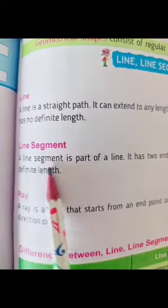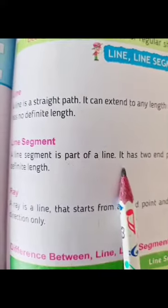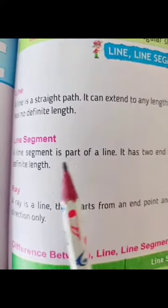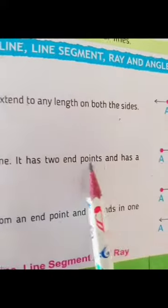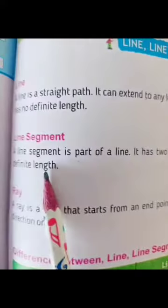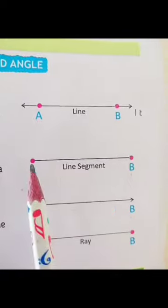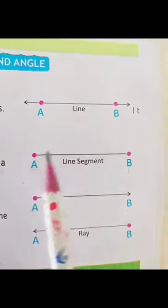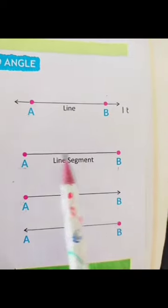Here is a line segment. A line segment is a part of a line. It has two end points and it has a definite length. In a line segment, you have two points — where you have started and where you have ended.